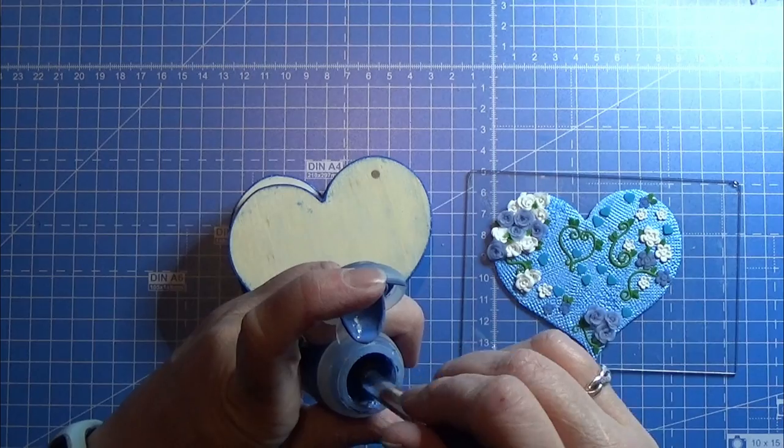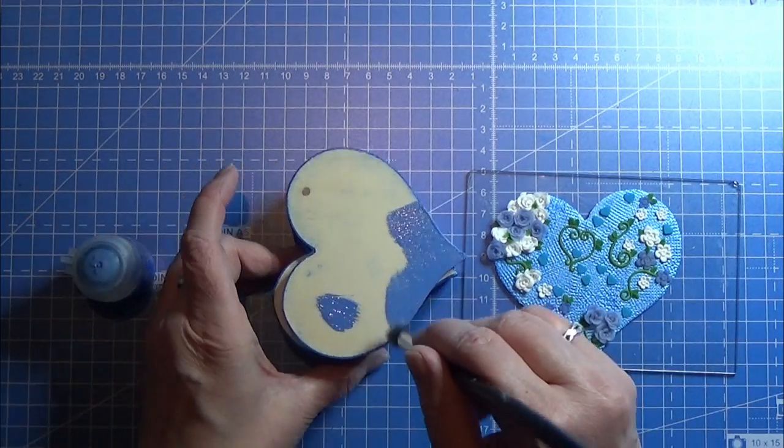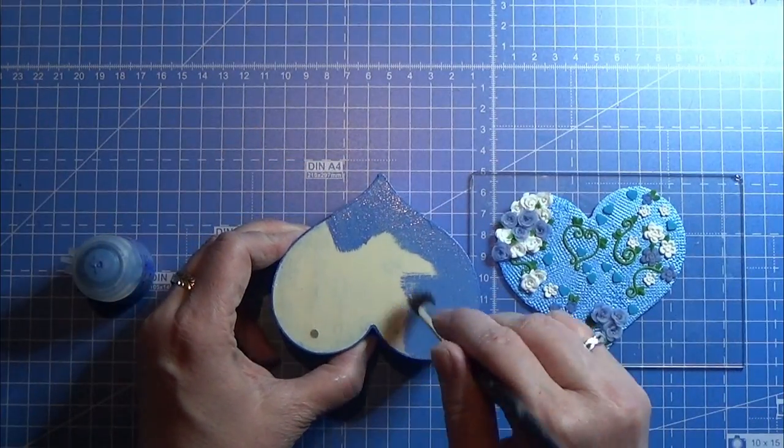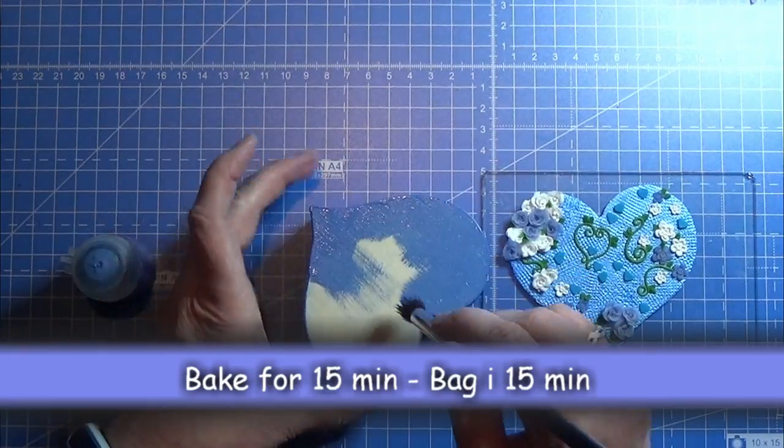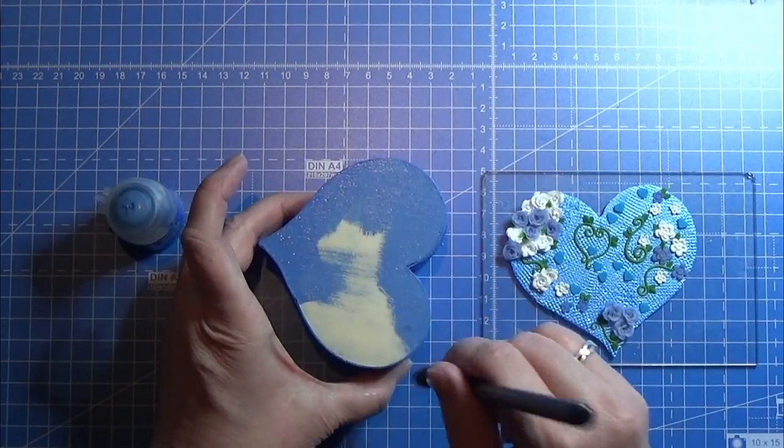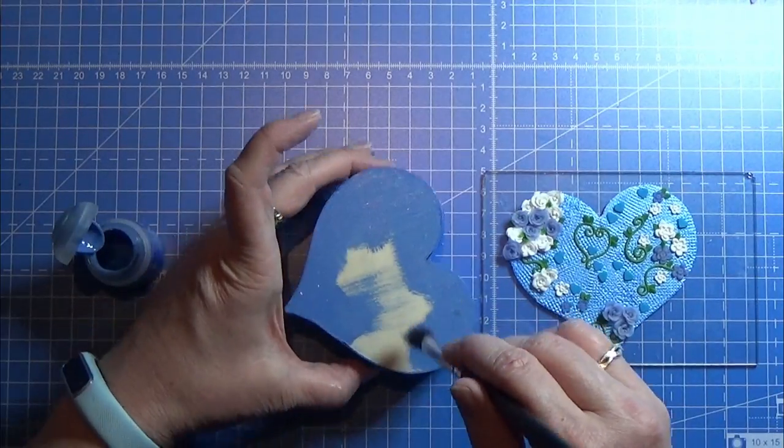I have some blue paint that matches the blue clay very nice, so I'm just going to paint the top of the lid here just on the edges to make sure that it's covering all the wood in the edges so that it does not show underneath this plate that we made.